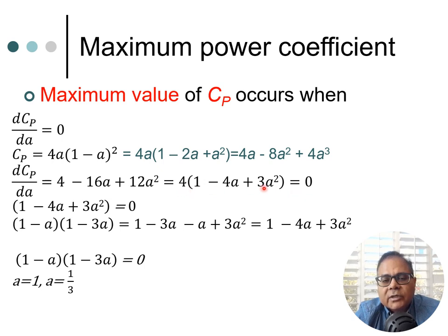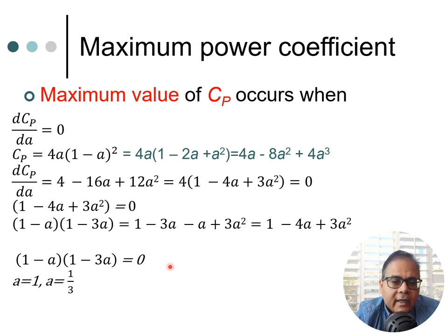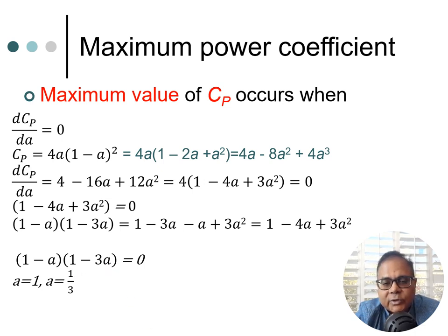Factoring out 4 from the derivative, we need 1 minus 4a plus 3a squared equals zero. This factorizes as (1 minus a)(1 minus 3a) equals zero, giving two roots: a equals 1, from (1 minus a) equals zero, and a equals one-third, from (1 minus 3a) equals zero. These are the two stationary points of the function C_p.